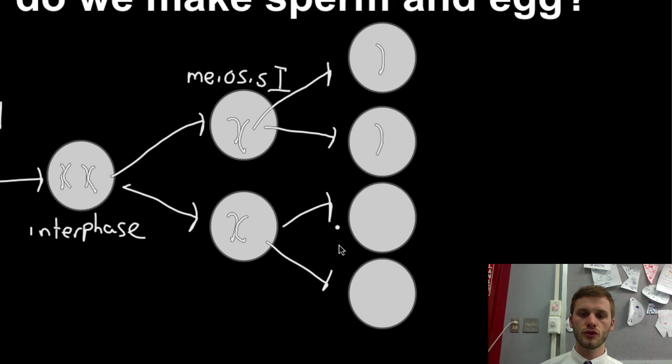The same thing's going to happen over here. These are going to divide into two new cells, each getting their own chromosomes. So these new cells, all created right here, could either be sperm or egg because the whole purpose of meiosis is to make sperm or egg.